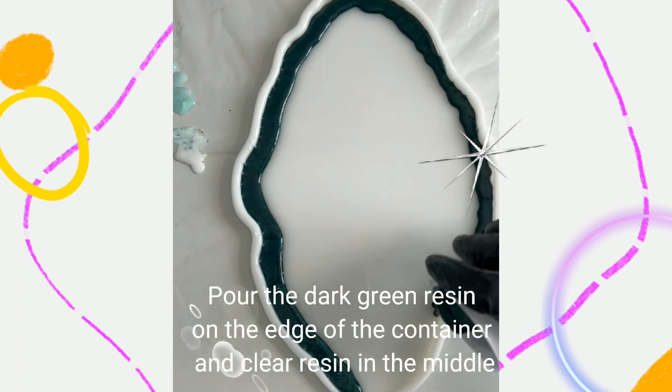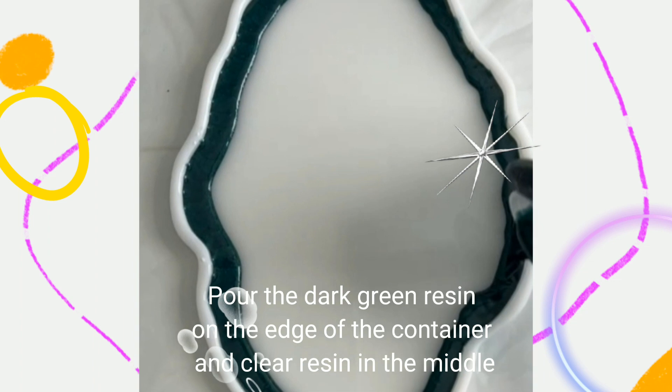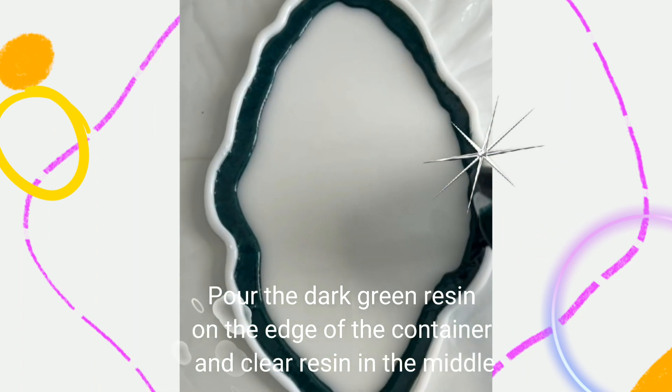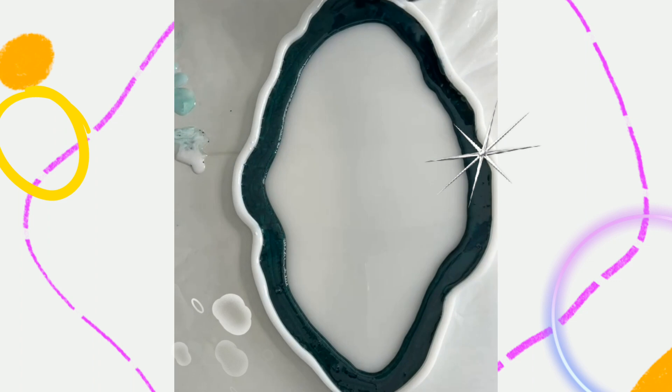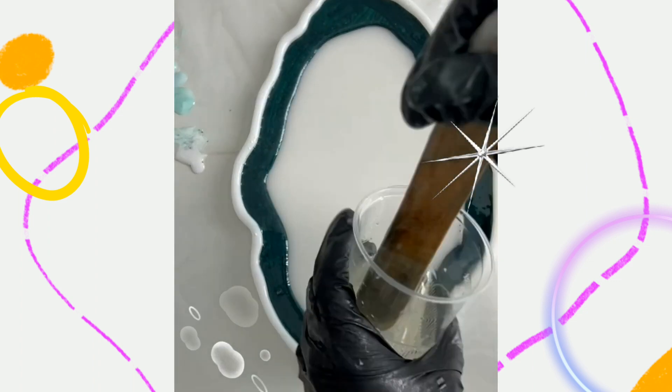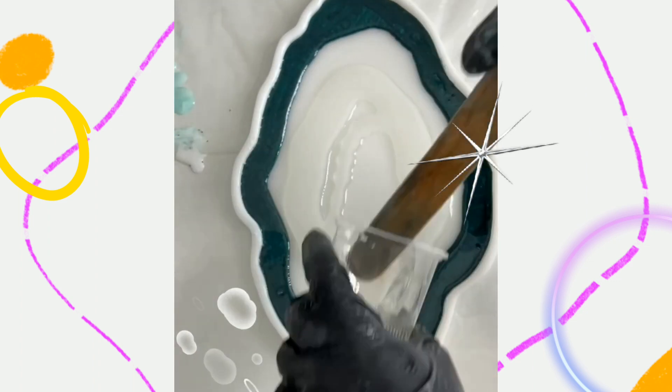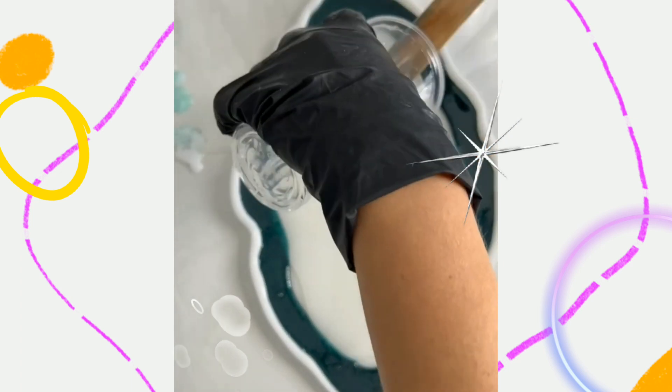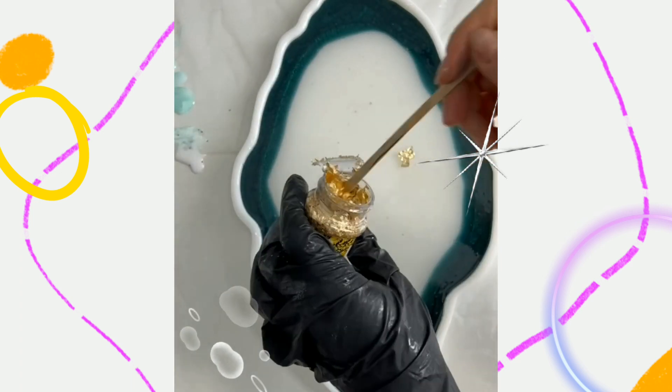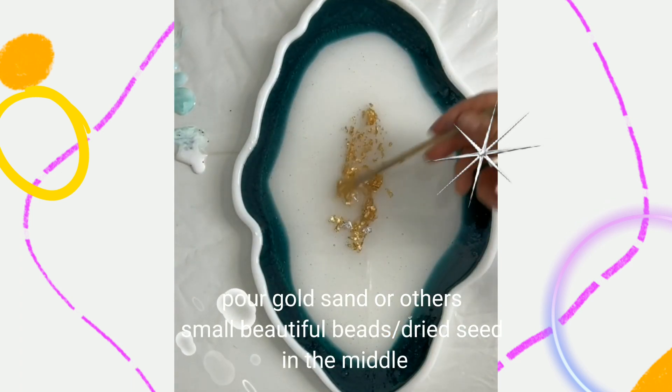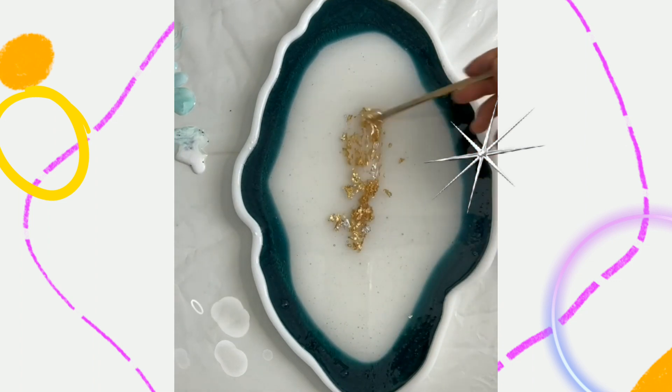Pour the dark green resin on the edge of the container and clear resin in the middle. Pour gold sand or other small beautiful beads or dried seed in the middle.